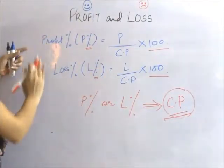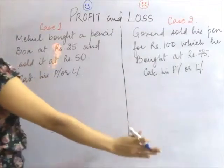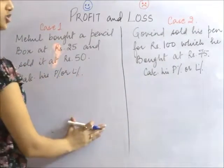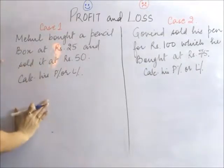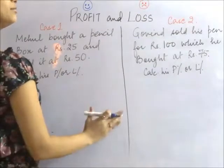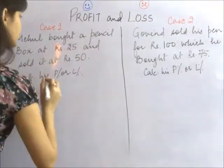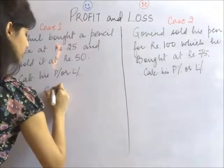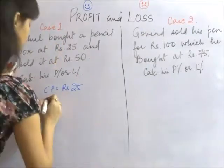Here is the formula. We are taking another two cases with the same profits but different profit percentage. Let us see how even by booking the same profit, one of them is actually making more profit. Mayul bought a pencil box at Rs. 25. The CP is Rs. 25 and sold it for Rs. 50.